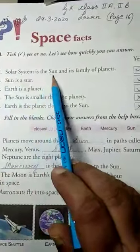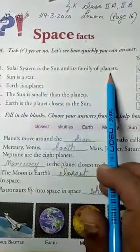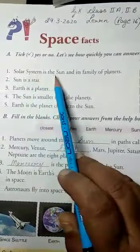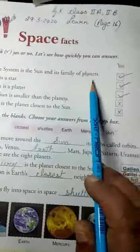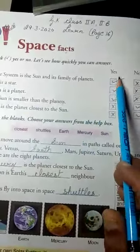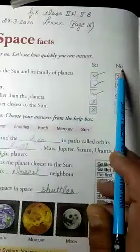Number one: Solar system is the sun and its family of planets. Now is the solar system comprised of sun and its family of planets? Yes. So put a tick mark in the yes column and put a cross in the no column.